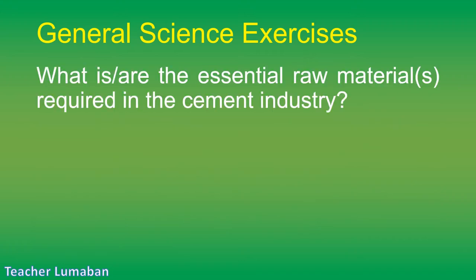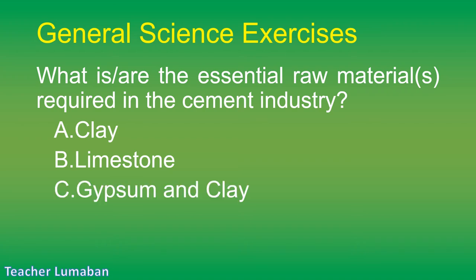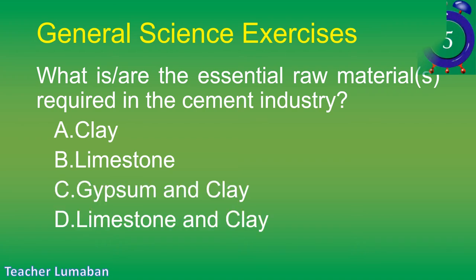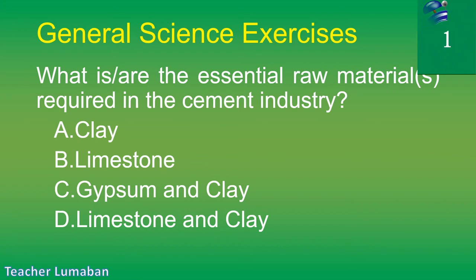What is/are the essential raw material(s) required in the cement industry? Letter A: clay. Letter B: limestone. Letter C: gypsum and clay. Letter D: limestone and clay.